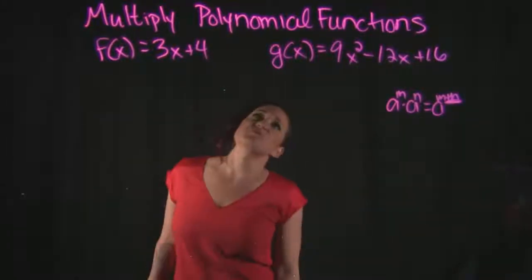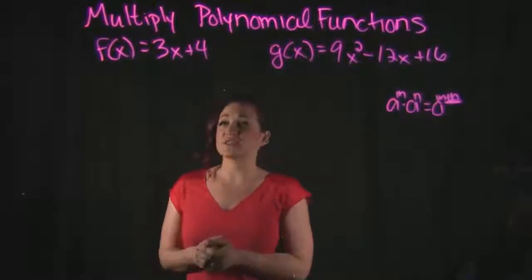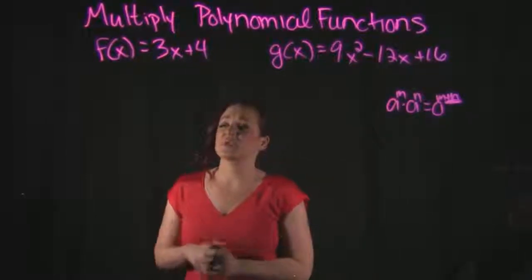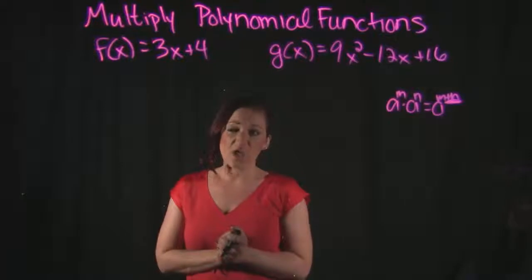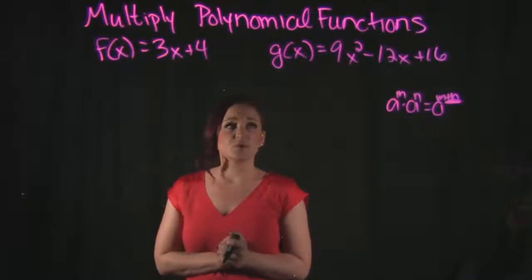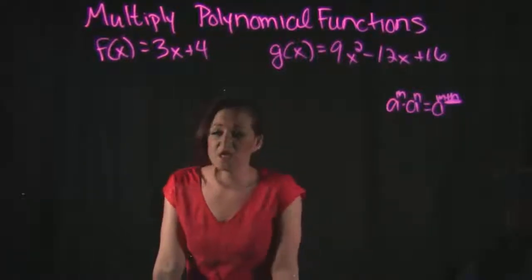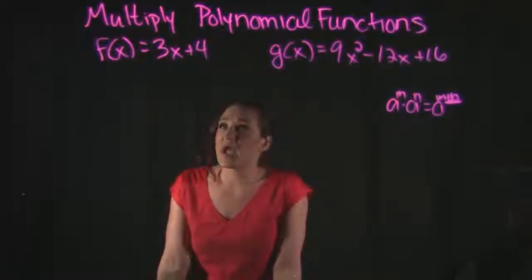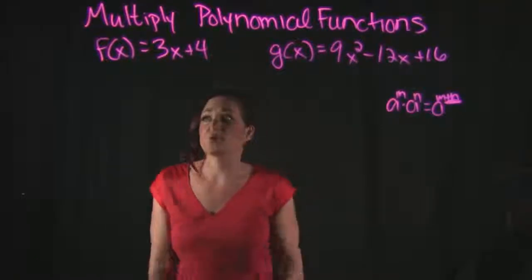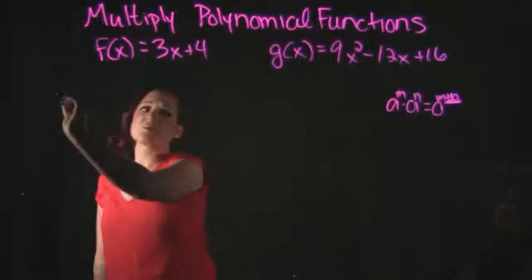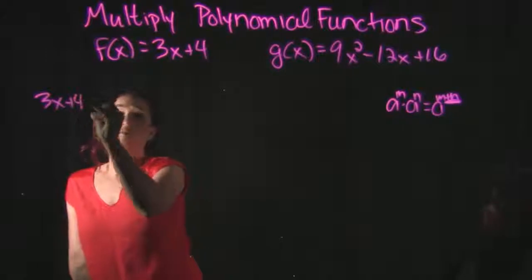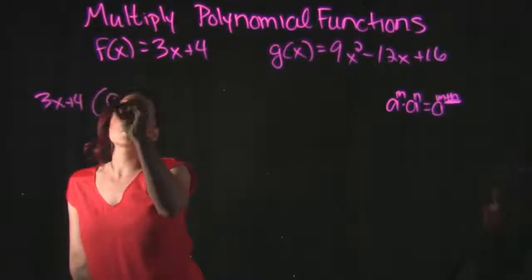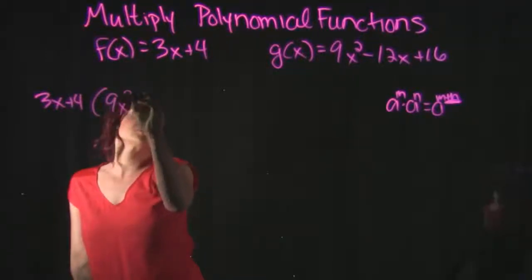If you're being asked to multiply polynomial functions, the example we have on the screen here says that f(x) is equal to 3x plus 4, and g(x) is equal to 9x squared minus 12x plus 16. So we have a binomial times a trinomial. I am going to use the process of distributing in order to do this multiplication.